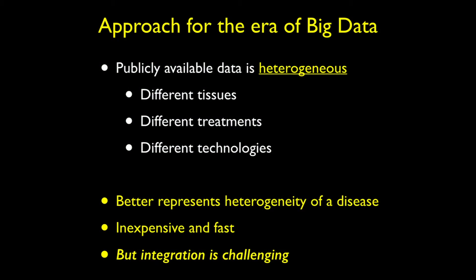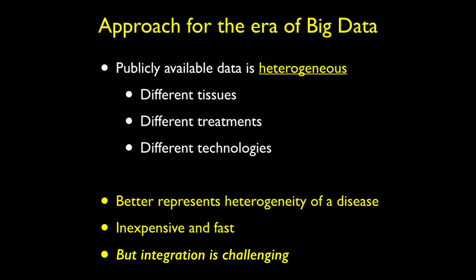That introduces not just treatment heterogeneity, but also biological heterogeneity, which is useful because we really want to understand how a disease manifests in different demographics. Everybody uses different technologies, so the technology itself is a confounding factor. If we can use all of this publicly available data, we can better represent the heterogeneity of a disease — and because the data is already available, it's very inexpensive and fast to collect.